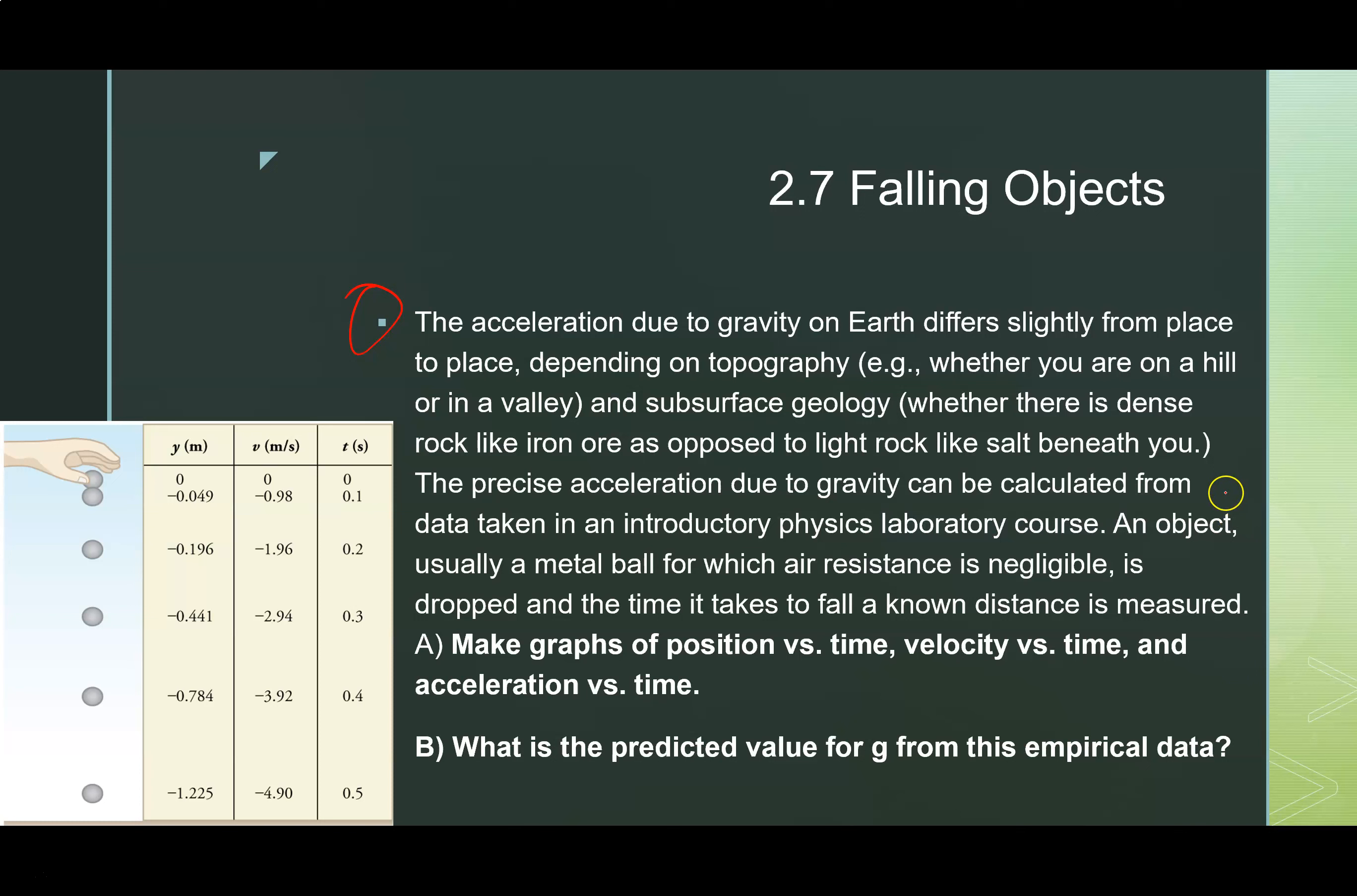So here we have an object that is being dropped, and how far it goes, in how long, and at what speed it's traveling at any instant in time has been tracked. One of the things that you're asked to do is to make graphs of position time, velocity time, and acceleration versus time. We start with a zero position, and we end up going negative. And what ends up happening over time is going to be a curve that looks something like this.